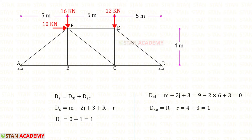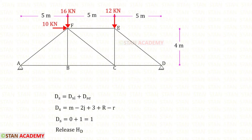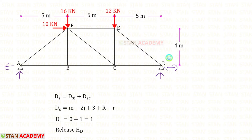So the degree of static indeterminacy will be 1. We have only external degree of static indeterminacy. Out of these 4 reactions, we need to release 1 reaction. I am going to release the horizontal reaction from D, that is HD.